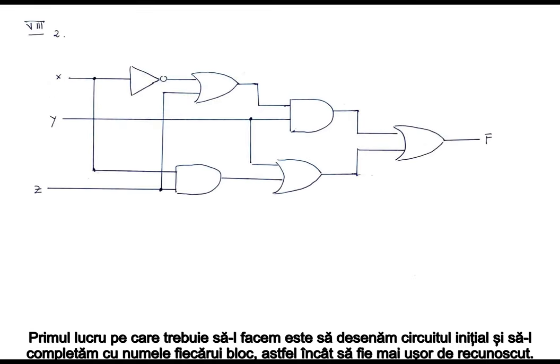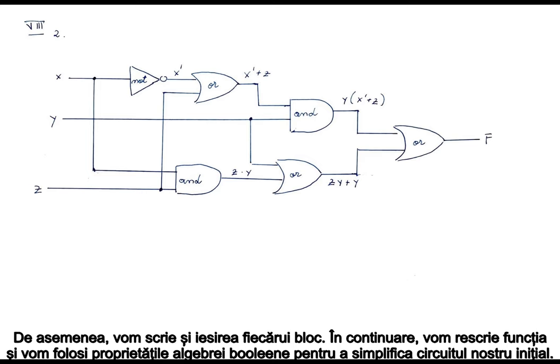The first thing we have to do is to draw the initial circuit and complete it with the names of each block so they are easier to recognize. We will also write the output of each block. Next, we will rewrite the function and use the Boolean algebra properties to simplify our initial circuit.